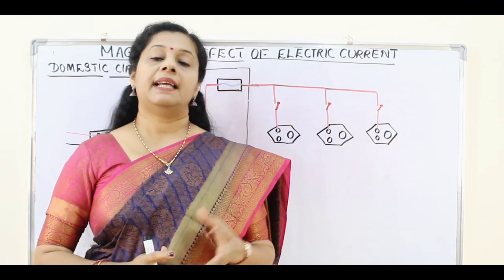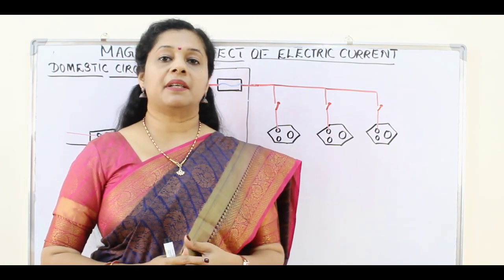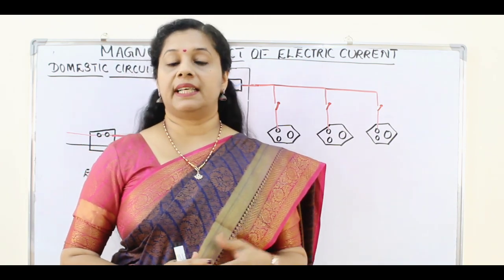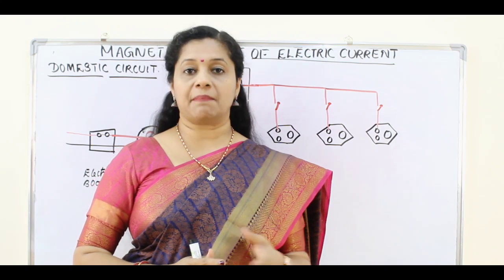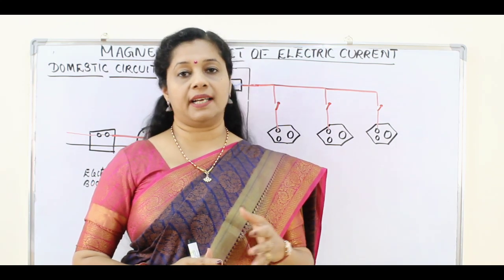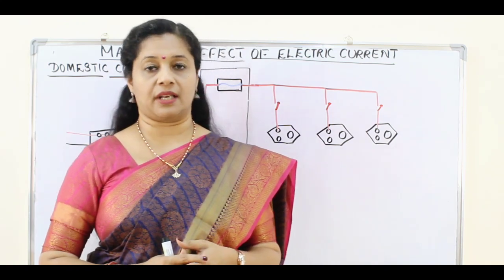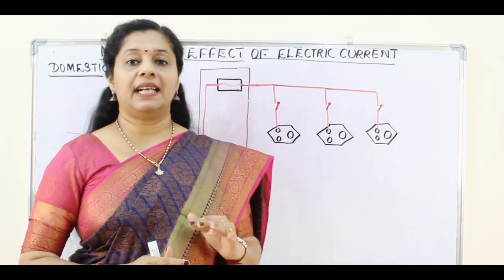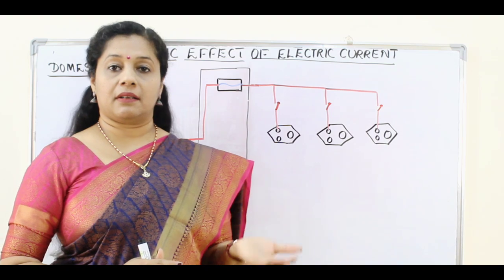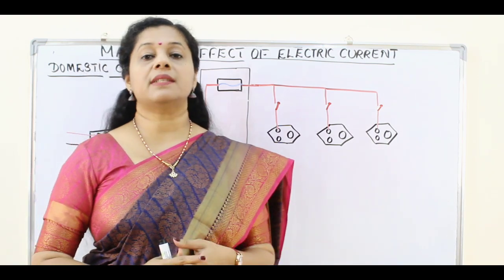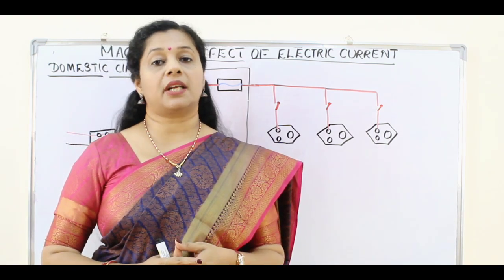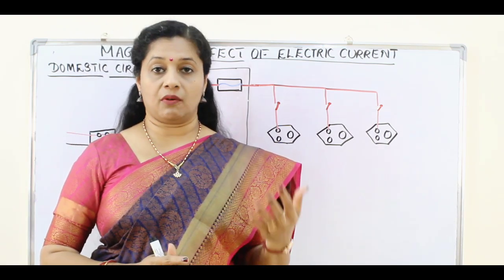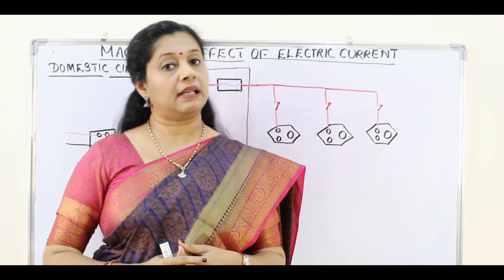Today we are going to discuss the domestic circuit, or how wiring is done in our household. In the electricity chapter we already learned there are two types of connections: one is parallel connection and one is series connection.